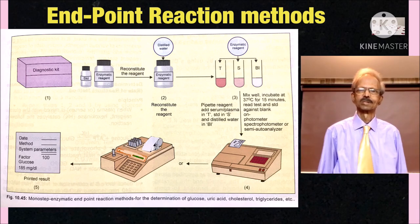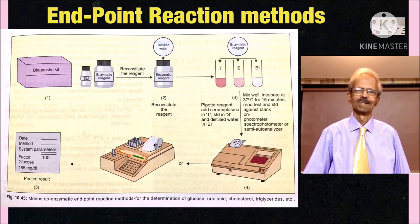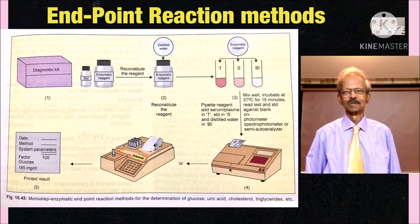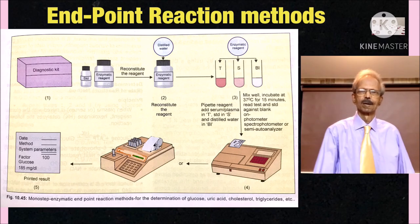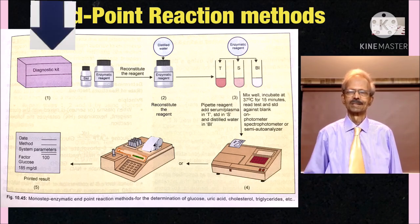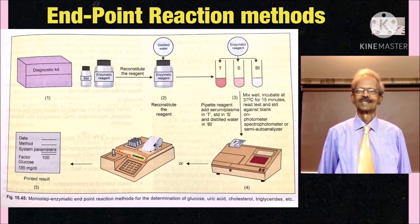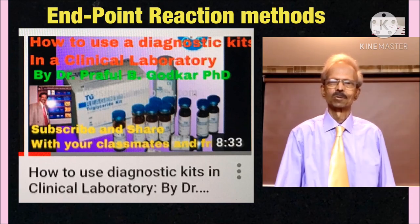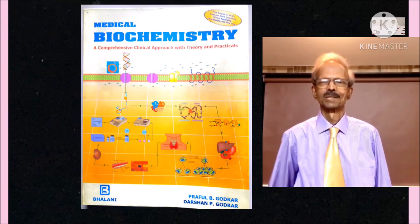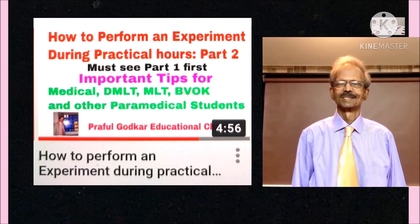Once you are able to perform the blood glucose test accurately by understanding the end-point method, you will be able to perform tests like serum uric acid, albumin, total proteins, cholesterol, triglycerides, calcium, inorganic phosphorus, etc. very easily. The methodology is exactly the same as shown in this line diagram. You should be able to use diagnostic kits and related literature well to perform SOPs of all these end-point reaction tests. Kindly refer to chapter 10 in our MLT book or chapter 6 in our biochemistry book for more information on biochemistry laboratory tests.